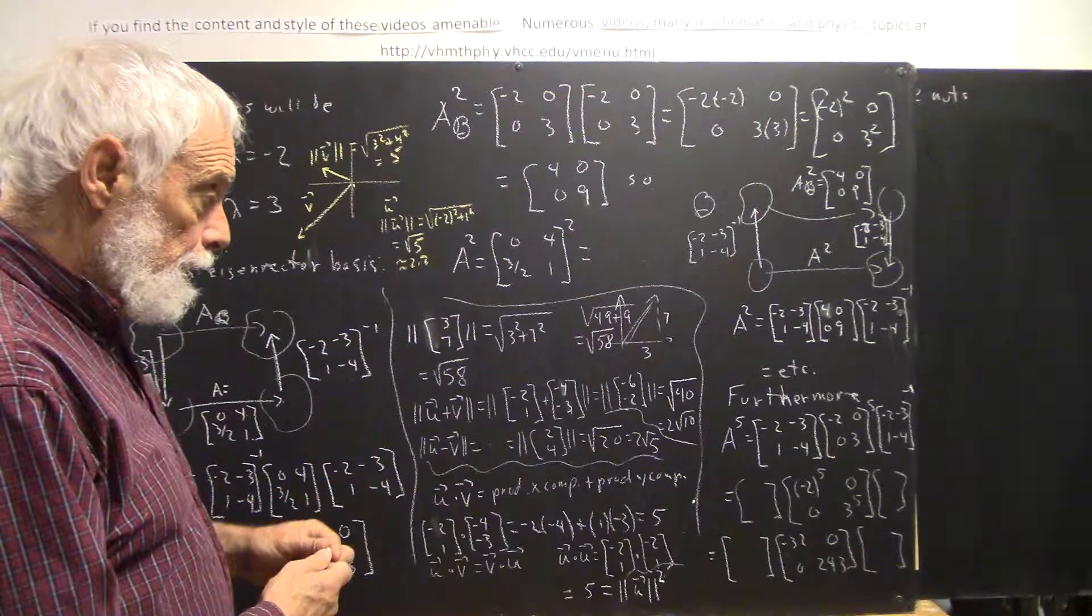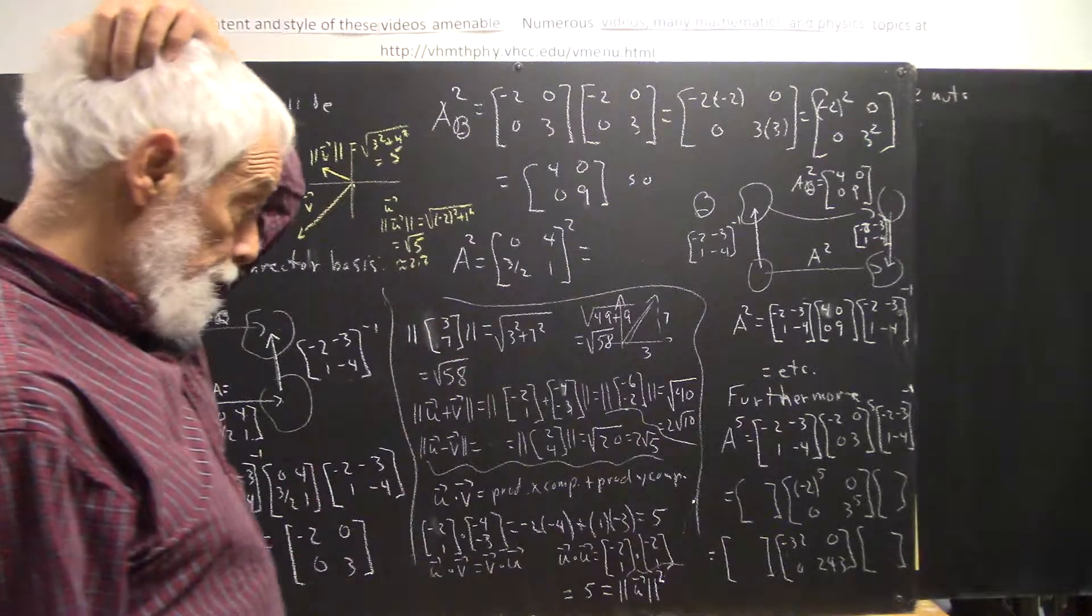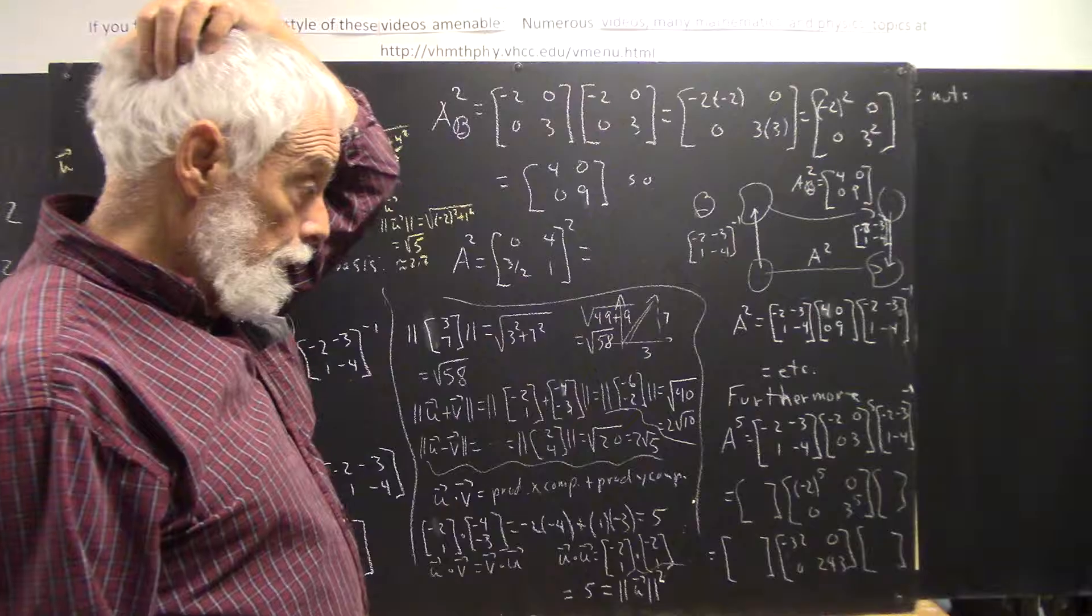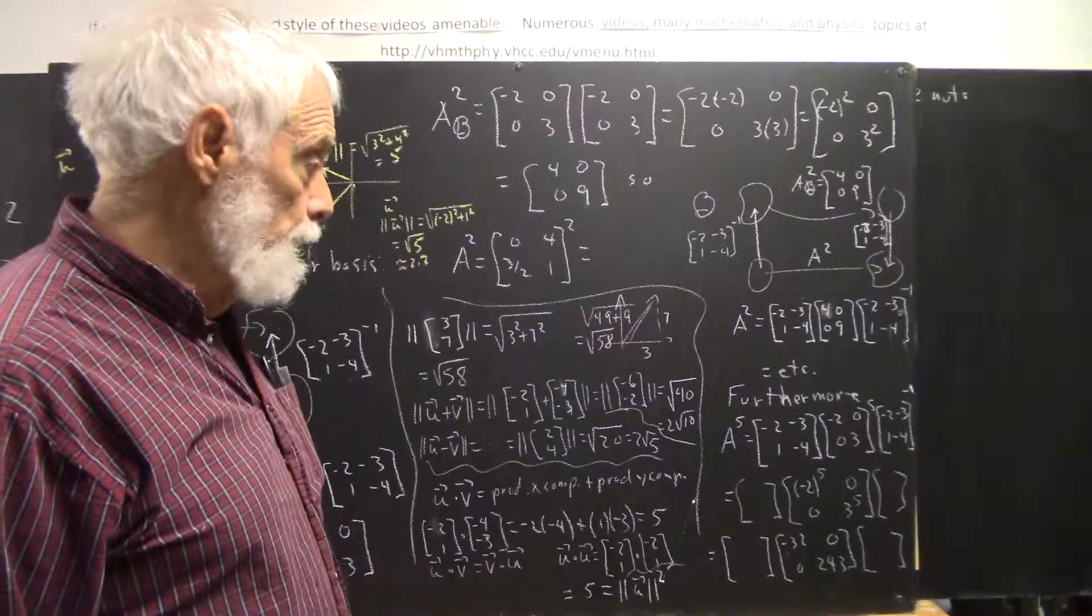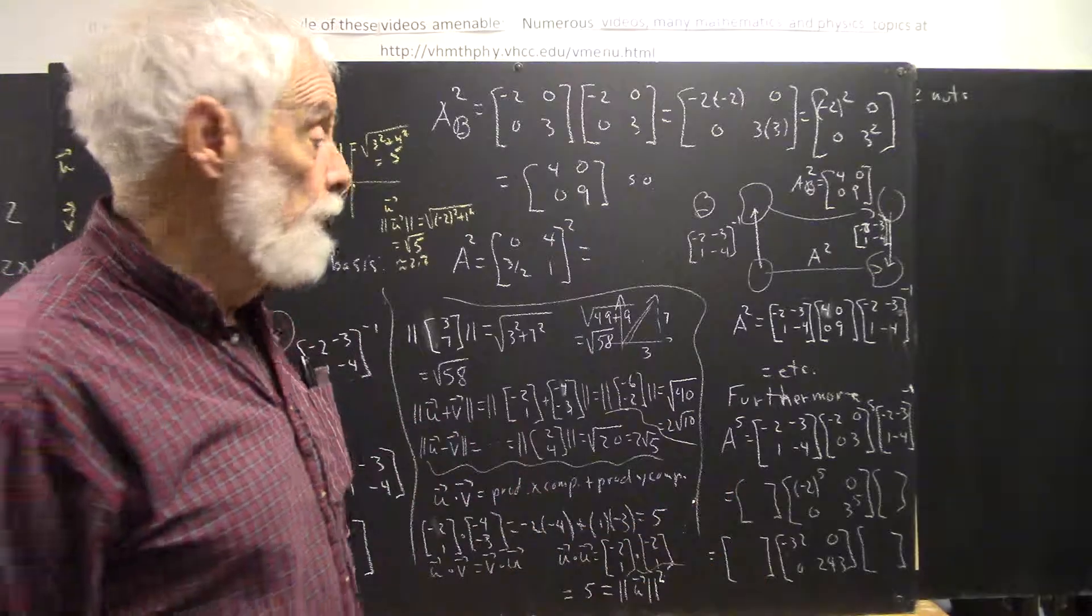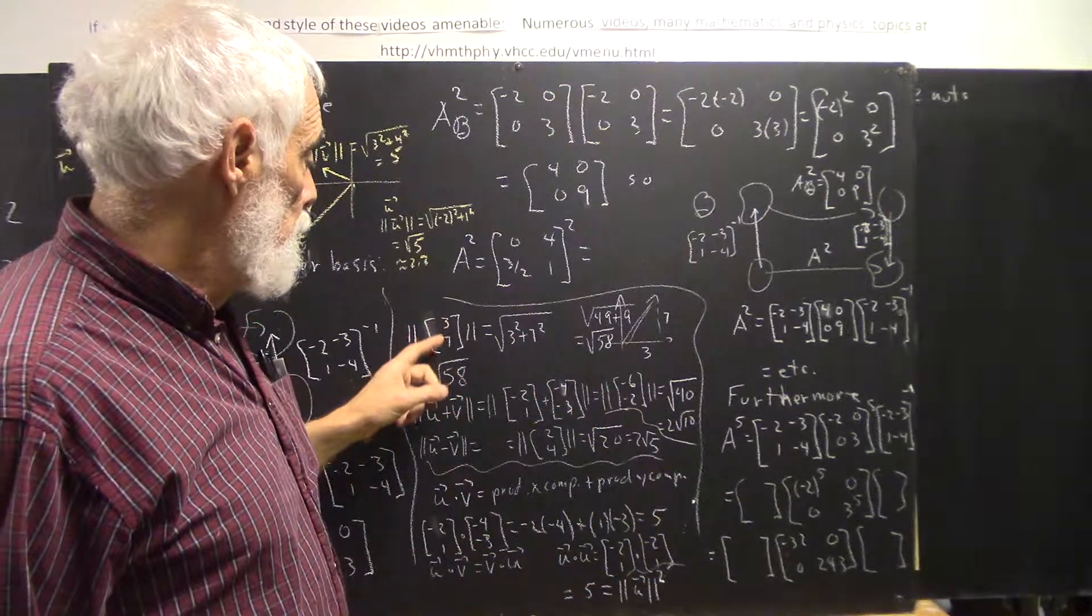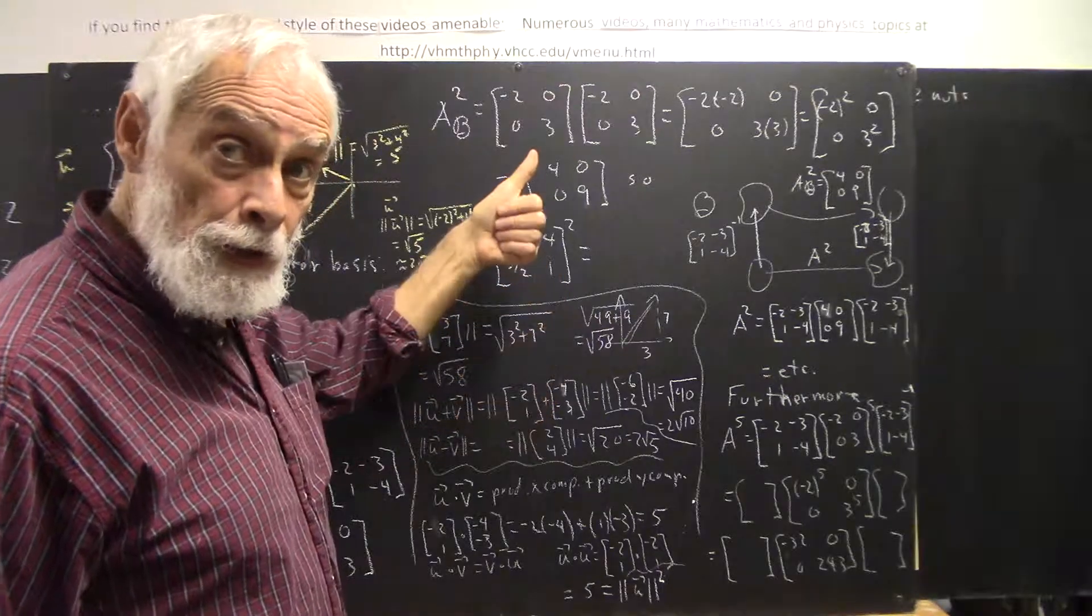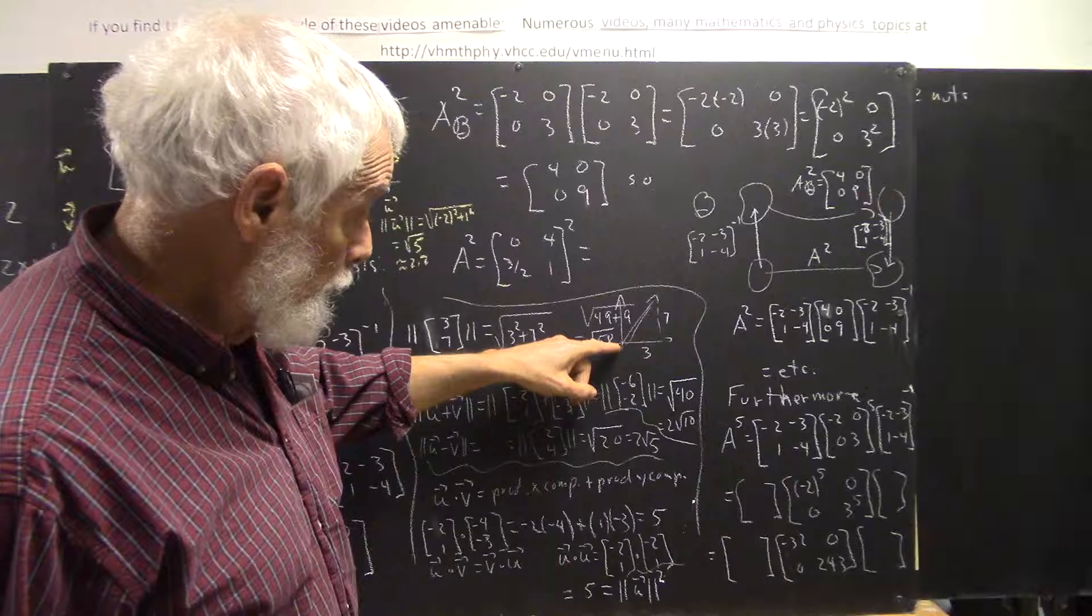So the magnitude of the vector (3,7) would be what? Well, one way to specify that magnitude is just using the Pythagorean theorem. The vector (3,7) means 3 this way, 7 this way. If we draw that in a coordinate system, we have a vector here.